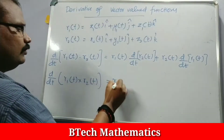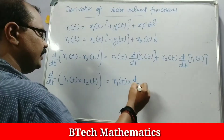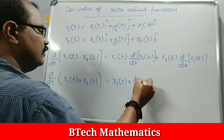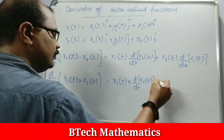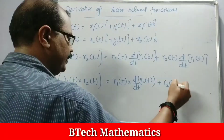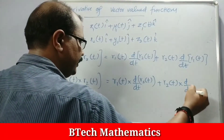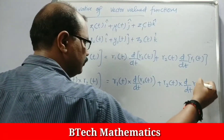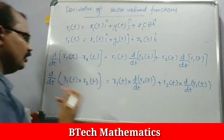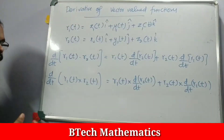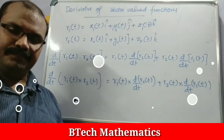Similarly, the cross product derivative: d/dt of R1 cross R2 equals R1 of T cross d/dt of R2 of T, plus R2 of T cross d/dt of R1 of T. These are the dot product and cross product rules.